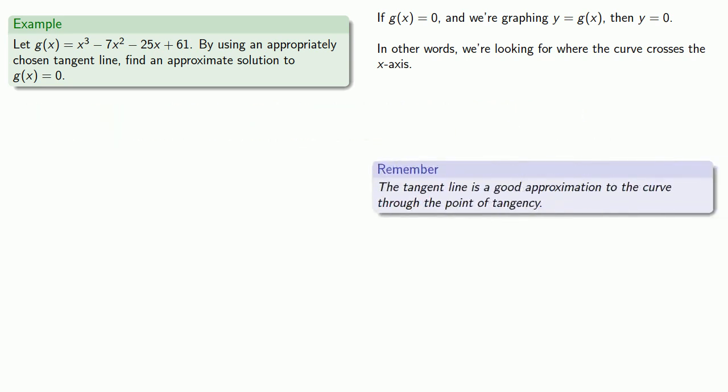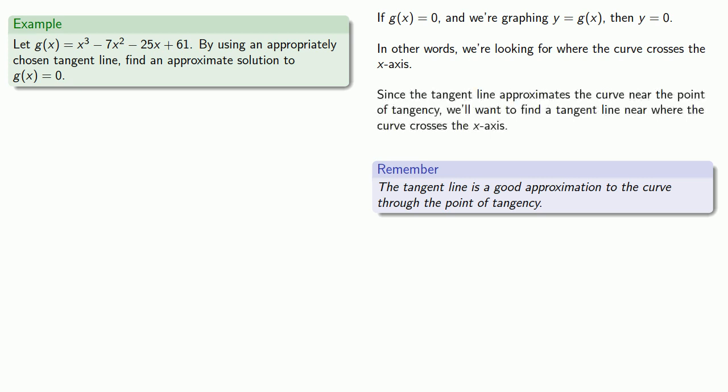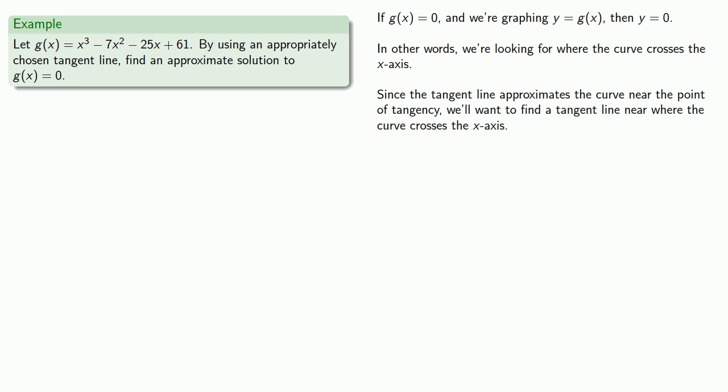But since we have calculus, we might remember that the tangent line is a good approximation to the curve through the point of tangency. Since the tangent line approximates the curve near the point of tangency, we'll want to find a tangent line near where the curve crosses the x-axis.